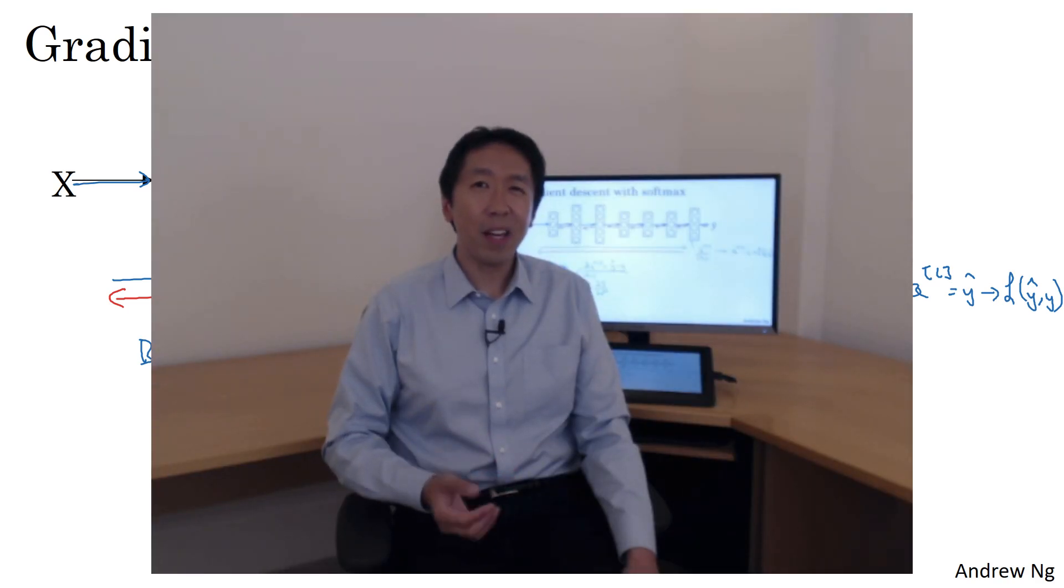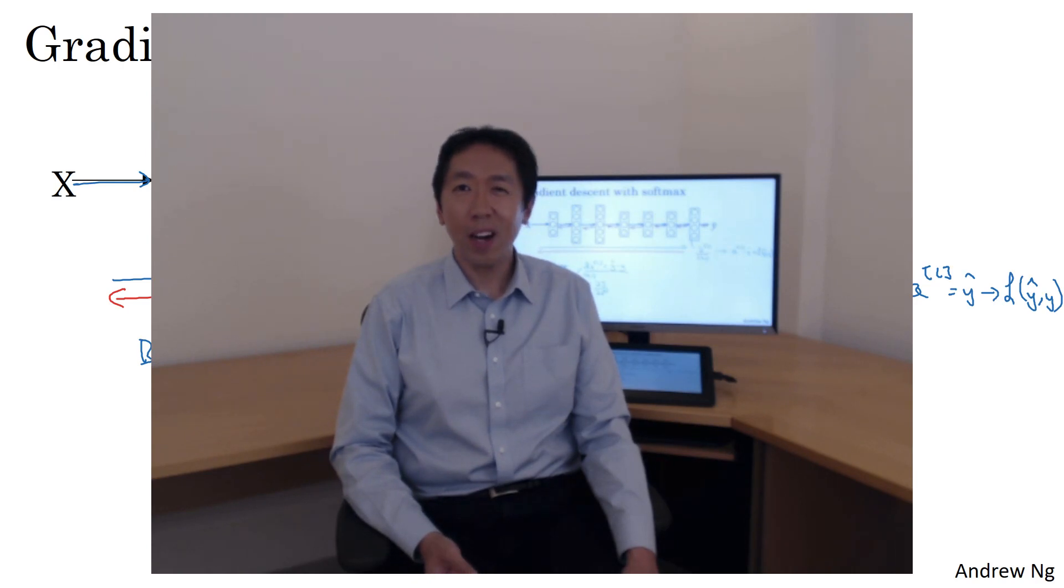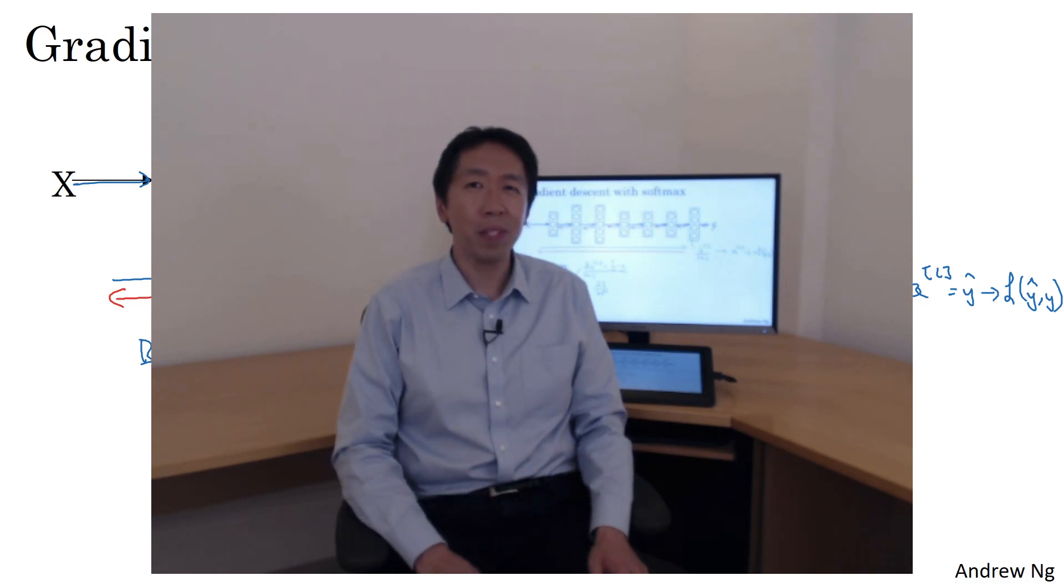So that's it for softmax classification. With it, you can now implement learning algorithms to categorize your inputs into not just one of two classes, but one of C different classes. Next, I want to show you some of the deep learning programming frameworks, which can make you much more efficient in terms of implementing deep learning algorithms. Let's go on to the next video to discuss that.